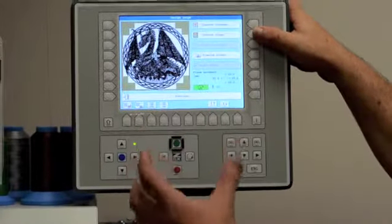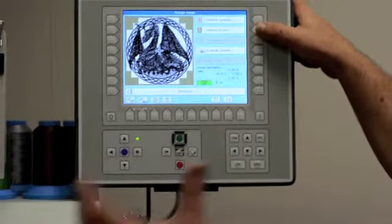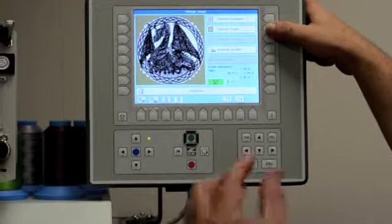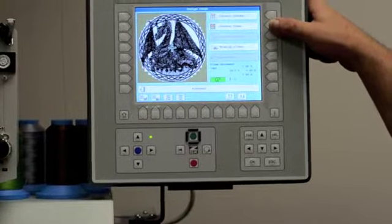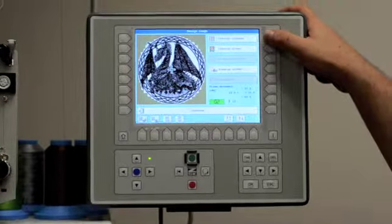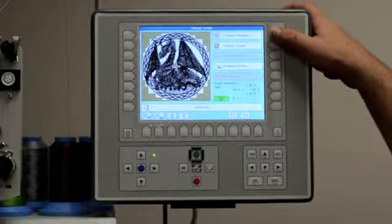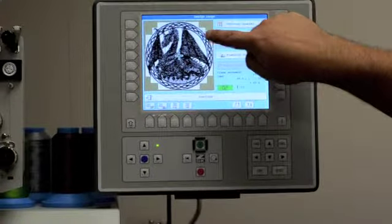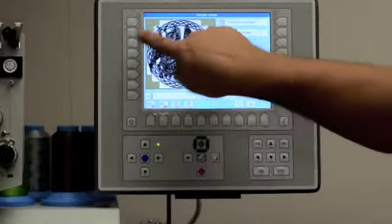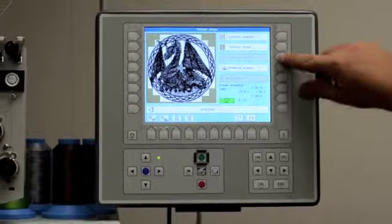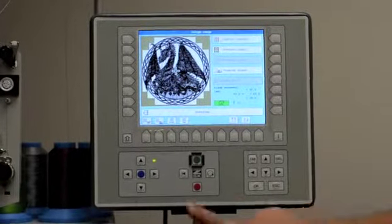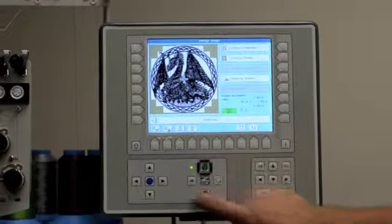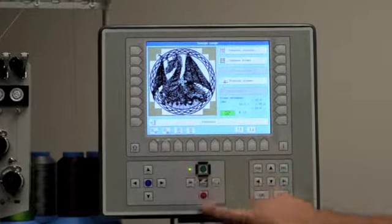As we hit contour finer, it will get closer to the actual stitch out of the design. You can see it's getting closer and closer. But if you do contour coarser, it will get further away from the design and trace it more coarsely. You can go frame slow or fast. You need to hit the ZSK button to get back to the right-hand side so that we can hit the start button.